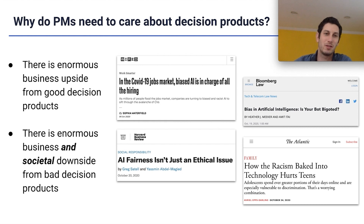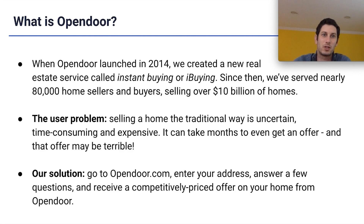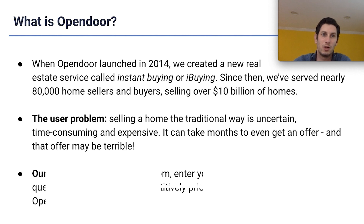If you've been reading the news over the past few years, you're probably well aware that AI products have presented all sorts of biases that have ramifications not just for their own companies, but for society at large. Before I dive into some of the lessons we've learned, I want to give a brief overview of Opendoor, since we'll be drawing from a lot of examples from Opendoor.